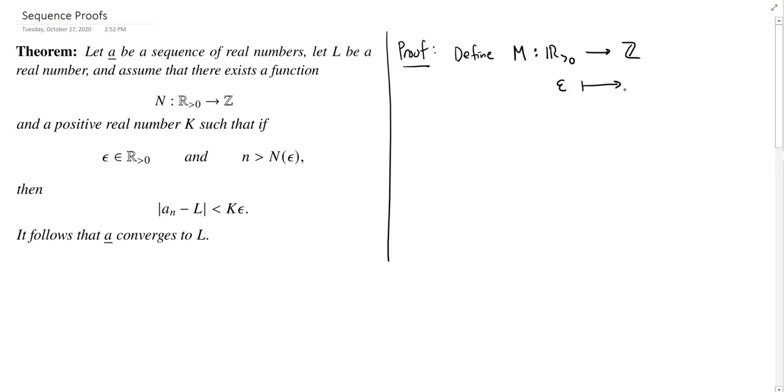I need to tell you what it's going to do. So if I have some positive real number, I need to tell you what integer to send it to. And so here's the cleverness.